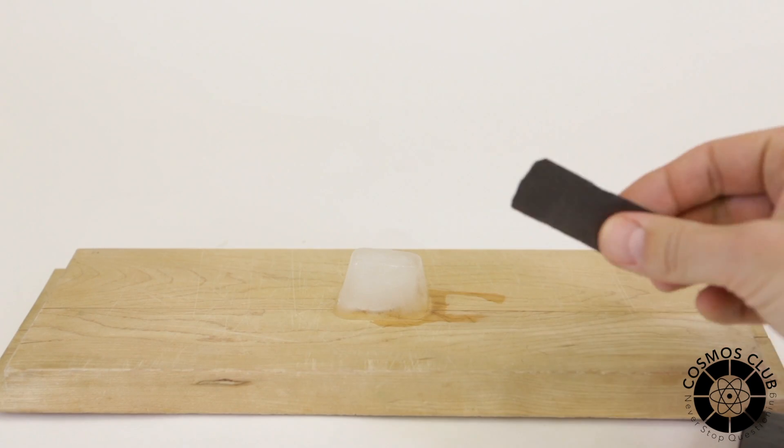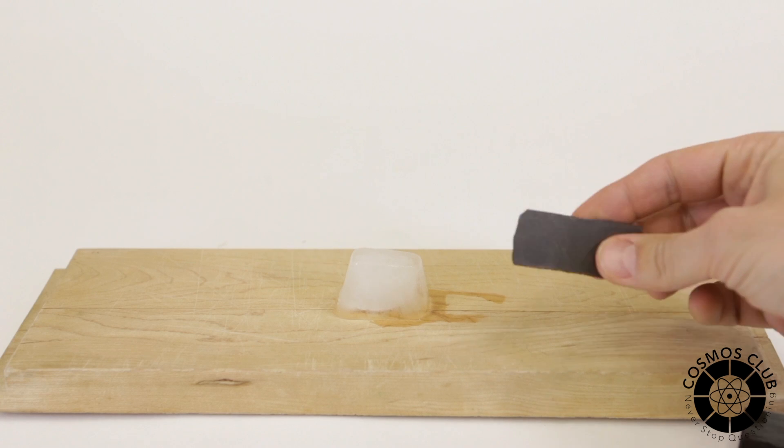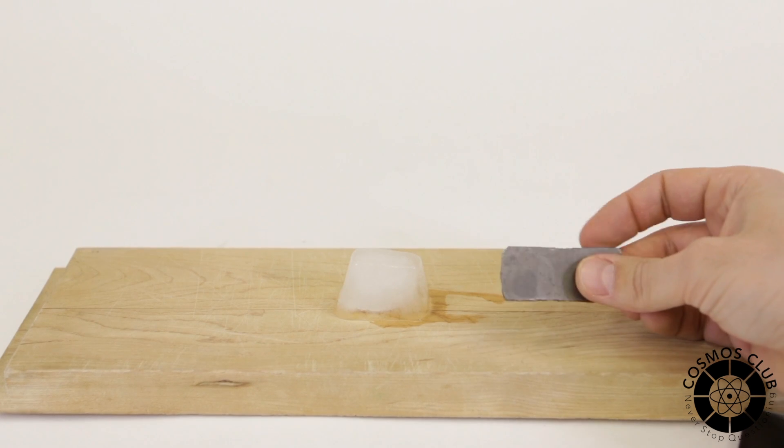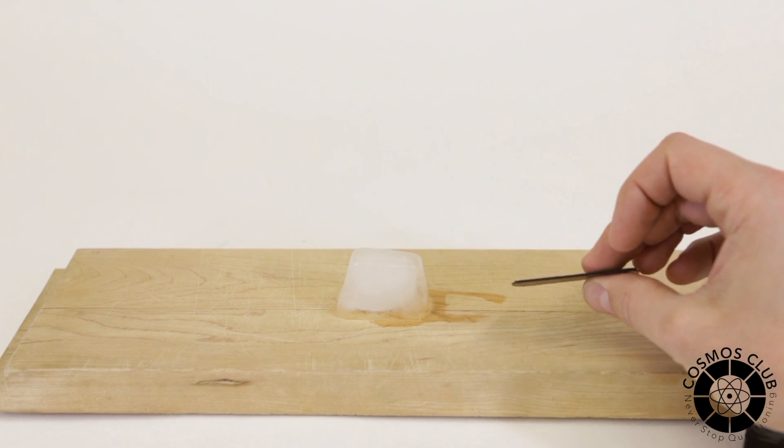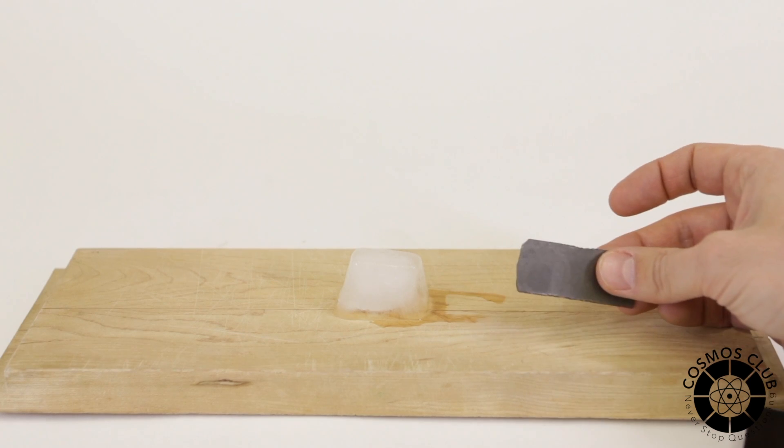Now, graphene is basically graphite, but arranged in a single layer of atoms. Very, very thin. This is several layers of graphene stacked on top of each other.